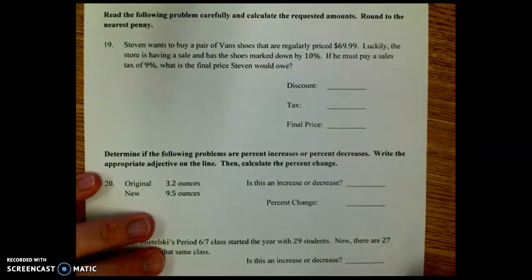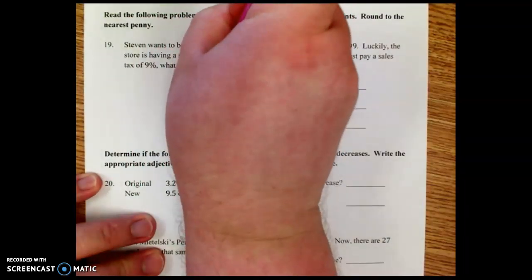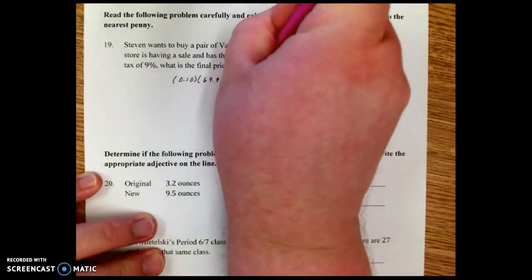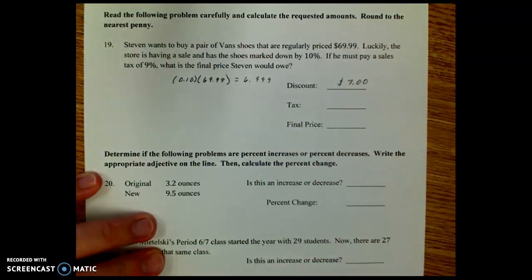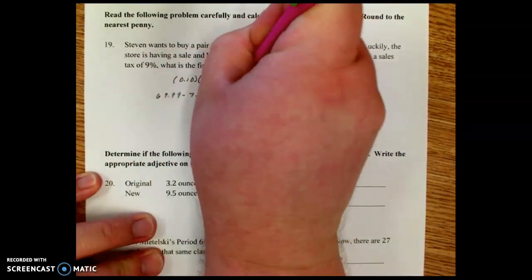Moving on, read the following problem carefully and calculate the requested amounts. Round to the nearest penny. Number 19, Stephen wants to buy a pair of Vans shoes that are regularly priced $69.99. Luckily, the store is having a sale and has the shoes marked down by 10%. If he must pay a sales tax of 9%, what is the final price Stephen would owe? Well, we're first going to find the discount of 10%. So we're going to do 0.10 times the price of the shoe, $69.99. And if we do that, we're going to get $6.999. So the discount is really going to be $7. So that makes the new price $69.99 minus $7. That's $62.99.